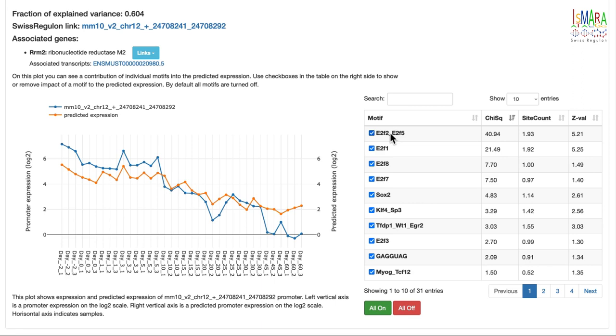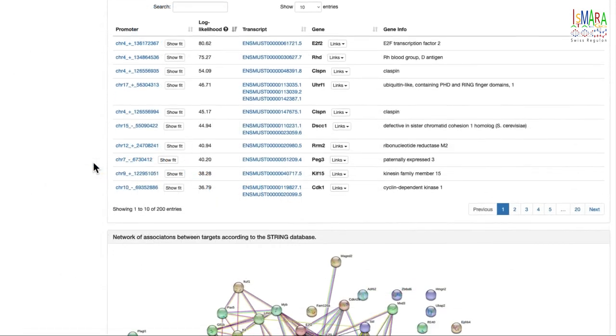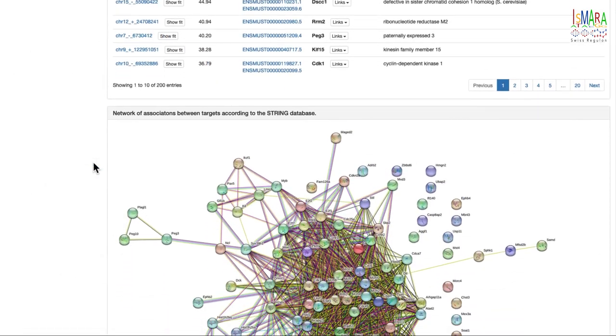On the right, one can interactively turn on and off the influence of individual motifs, and observe how this affects the predicted expression.